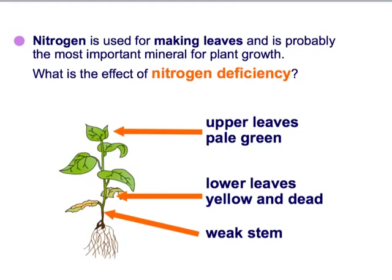As we've already discussed, nitrogen is used for making leaves. We can look at the effect of nitrogen deficiency in the plant. Because nitrogen is used for making leaves, you can see that these leaves aren't fully developed — they become yellow or dead. There is also a weak stem, all because there is no plant growth and no proteins being made using that nitrogen.